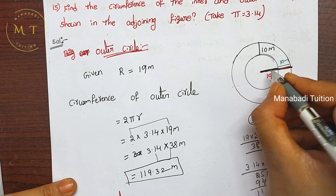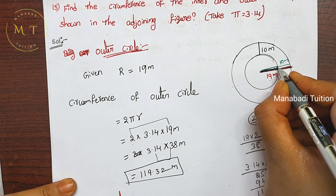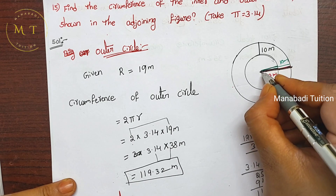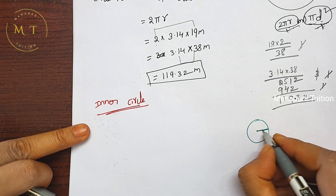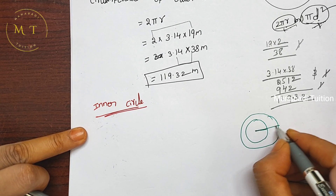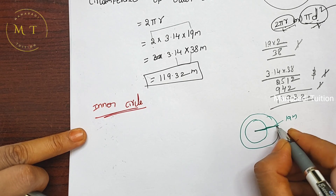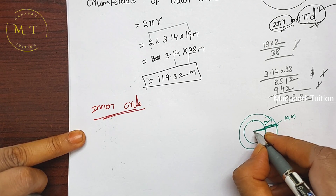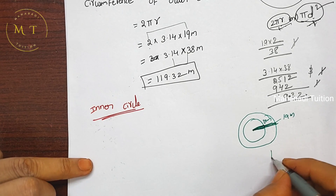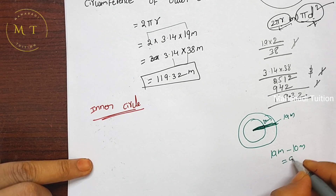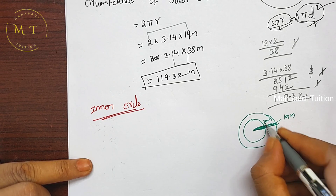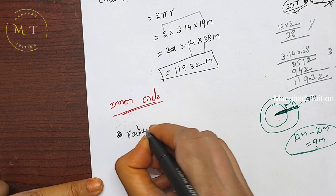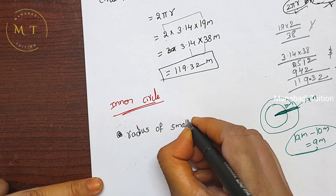For the inner circle, the total length from the outer circle is 19 meters and the track width is 10 meters. So we do subtraction: 19 meters minus 10 meters equals 9 meters. This 9 meters is the radius of the inner circle.